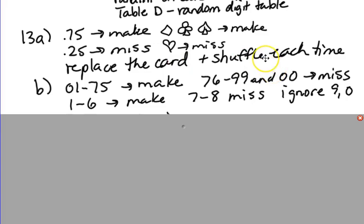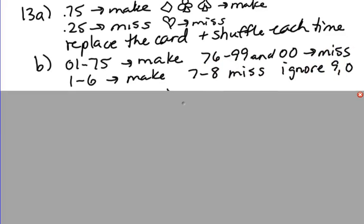Now another way you could do it is with single digits. You could let 1 through 6 represent making a free throw, 7 and 8 represent missing. So you'd have six numbers for making, two numbers for missing. That would give you the 3/4 and the 1/4. And then just ignore the digits 9 and 0.